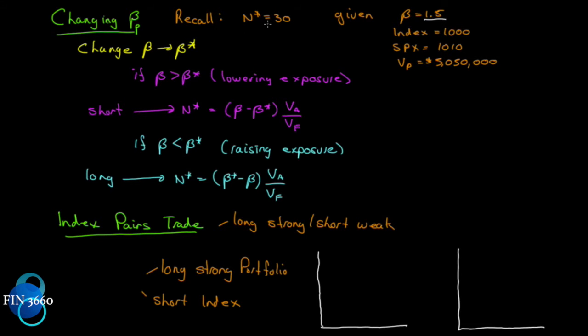Let's recall the problem that we did in the previous video. The optimal number of contracts we entered into was 30, given that we had a beta of 1.5. The index at t equals zero was at 1,000, while SPX, a four-month futures contract, was currently priced at 1,010. The value of our portfolio was $5,050,000.